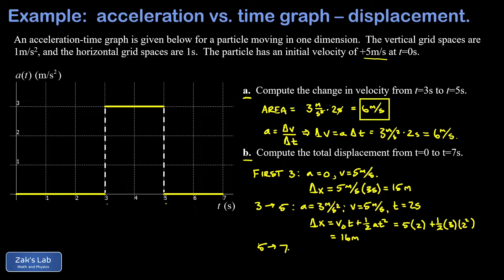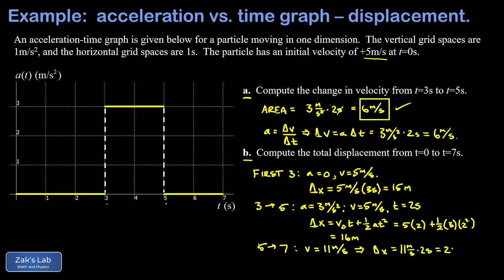Finally, from t equals five to t equals seven seconds, the acceleration is again zero, so it's a constant velocity problem. But the velocity is now larger — it grew by six meters per second during the acceleration phase, making it 11 meters per second. It stays constant at 11 for the last two seconds, so the displacement is simply 11 meters per second times two seconds, giving 22 meters.